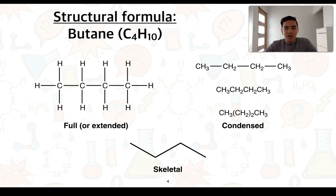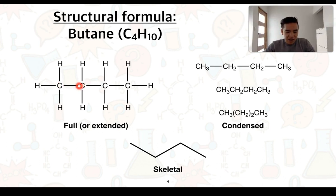Back in stage 1 chemistry, I would have introduced to you this idea of structural formulae. If we start off with the full or extended structure, this shows you all of the atoms that are involved in covalent bonding within a molecule. We've got an example here of butane. We know that we could group up the hydrogens bonded to each carbon and represent it in a more condensed form. We could even look at removing the bonds between the carbons, giving us another condensed form.